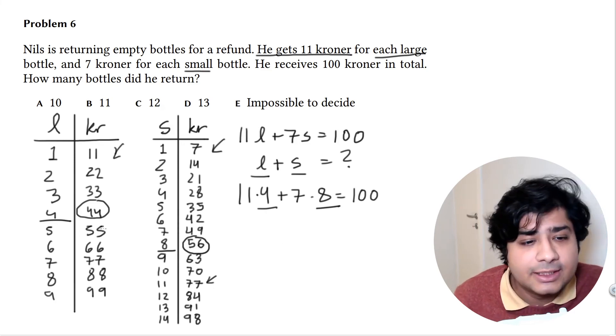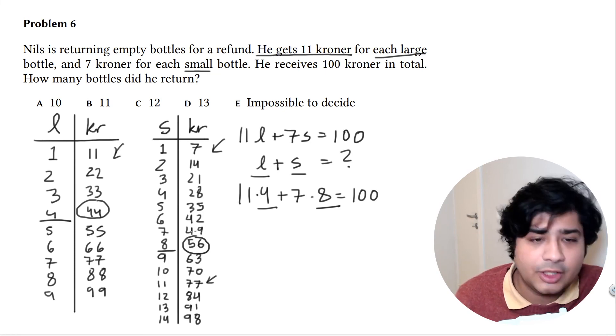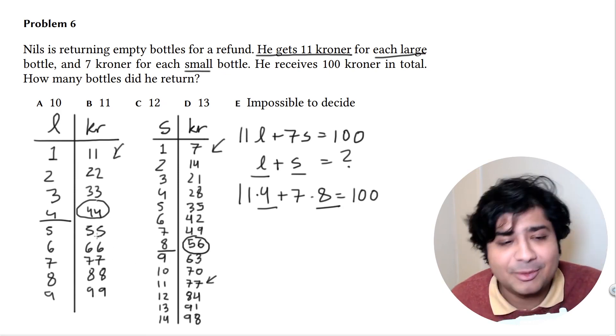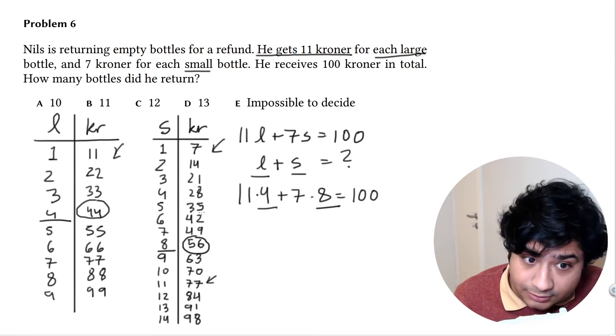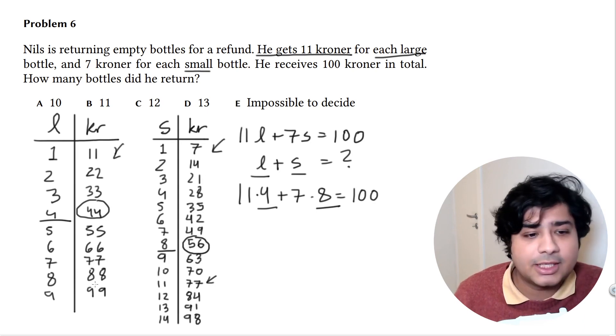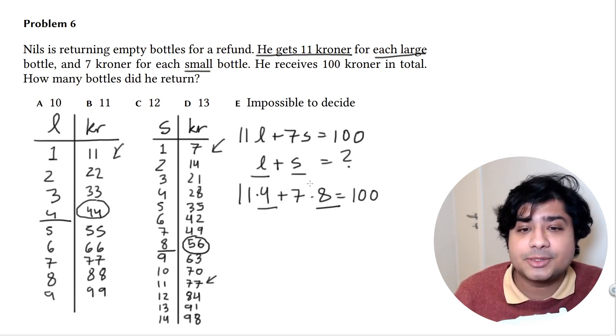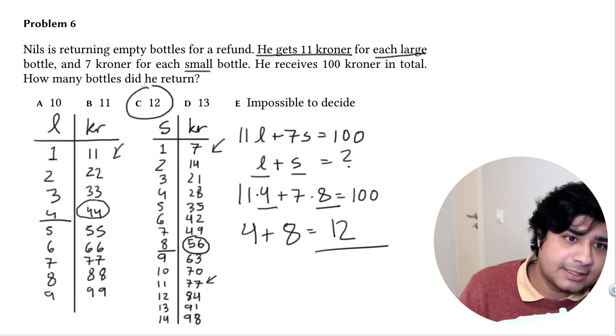With 55 we're looking for 45—no 45 here. 66, we're looking for 34—not 34. 77 doesn't work, 88 doesn't work, 99 doesn't work. These are the only options, which means the final answer is 4 plus 8, which is 12. C is the correct answer.